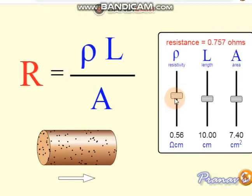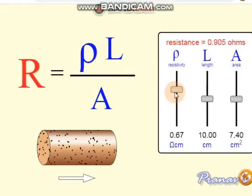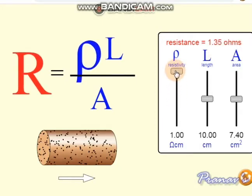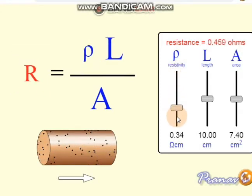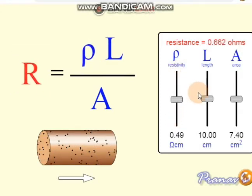Note the difference between resistance and resistivity. When the resistance is 1.35 ohm, the resistivity is 1 ohm per centimeter. Note that ohm-centimeter is not the SI unit — ohm-meter is the SI unit.